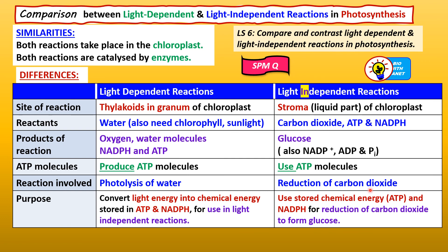The purpose of the light-dependent reactions is to convert light energy into chemical energy stored in ATP and NADPH for use in the light-independent reactions. The purpose of the light-independent reactions is to use that stored chemical energy — ATP and NADPH — for the reduction of carbon dioxide to form glucose.